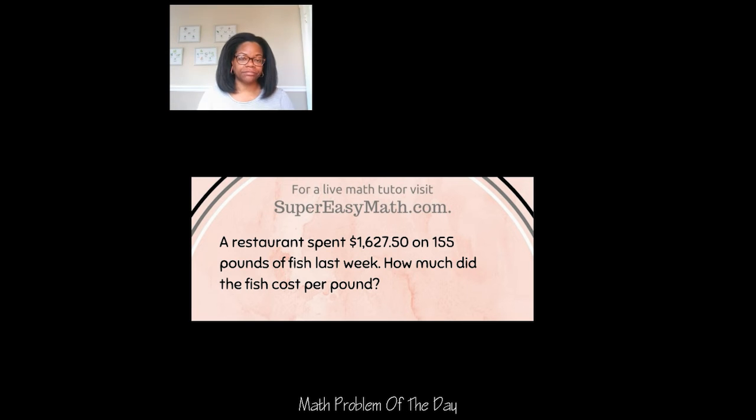Well, this is a division problem. I'm going to take my total dollar amount and put it underneath my division sign, which is 1,627.50. I'm going to divide it by 155. To do that, I can see that 155 can go into 162 one time.